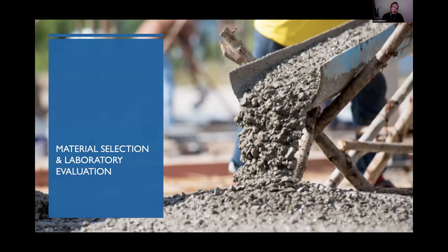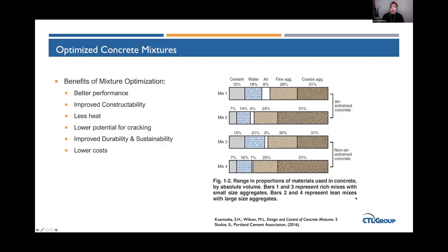Moving on to how material selection and laboratory evaluation can aid in identifying proportions and performance that lead to desirable volumetric behavior. In North America, the availability of materials allows ready-mix suppliers or contractors to choose different cementitious materials and blend them at the batch plant. In Europe, the use of blended cements is more prominent, but in either case options are available depending on region.